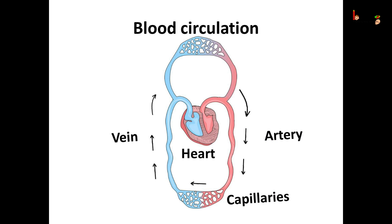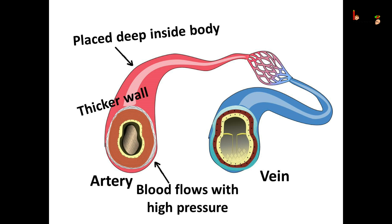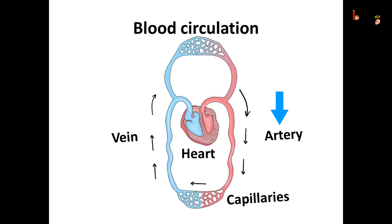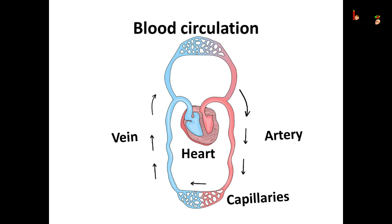Coming to blood circulation: the blood flows inside the blood vessels. There are two types of blood vessels — arteries and veins. The arteries take blood from the heart to the different organs, and the veins carry blood back to the heart. The arteries divide into extremely thin tubes called capillaries, and the capillaries join up to form veins. Capillaries form a web-like network to reach the maximum number of cells.